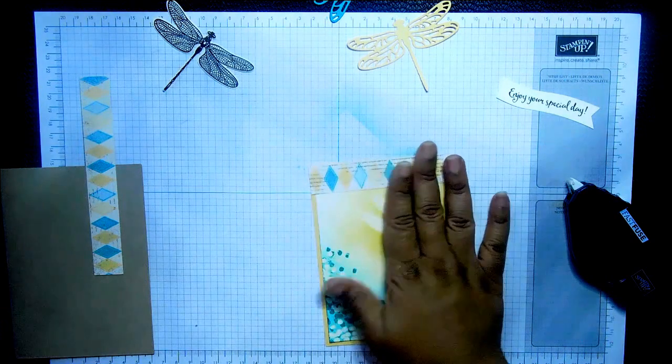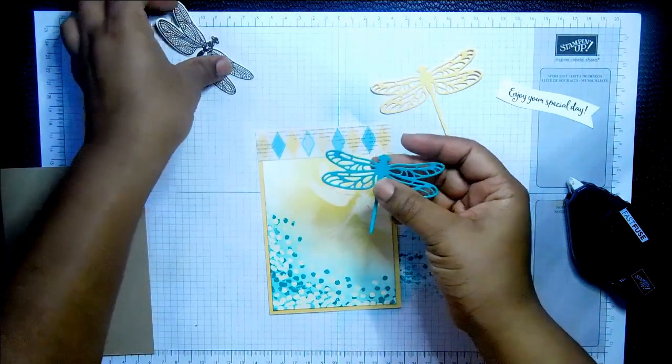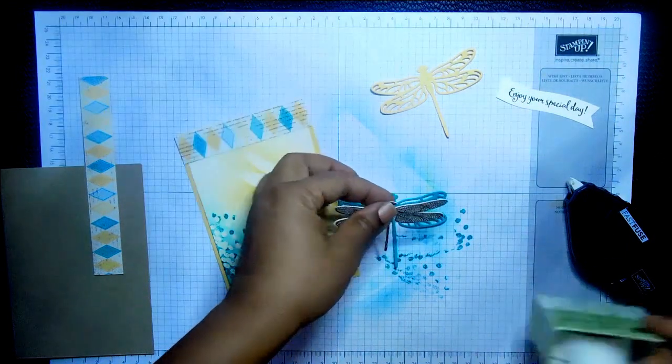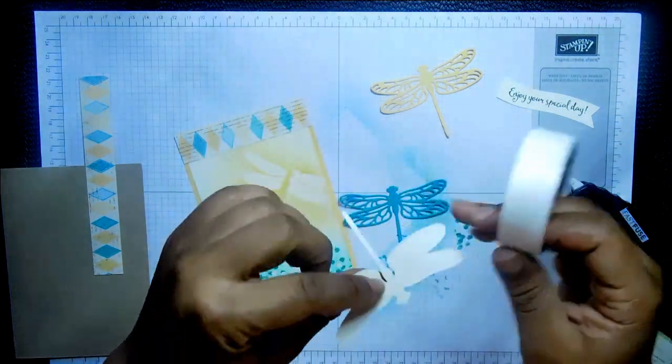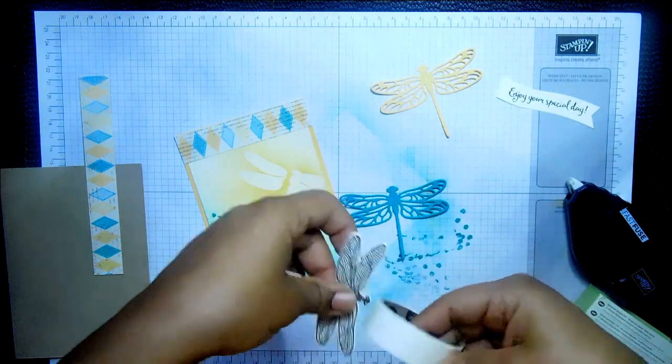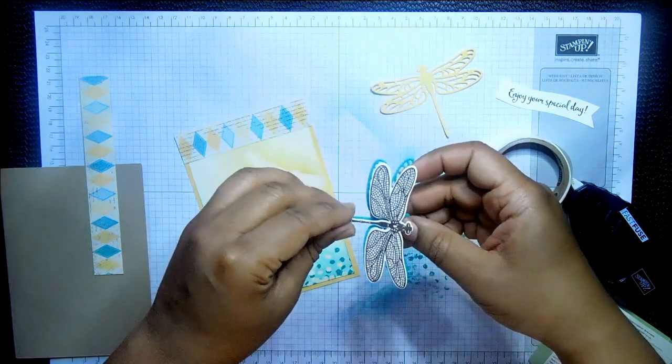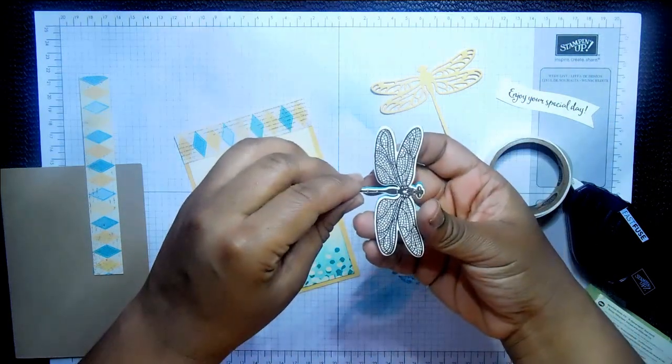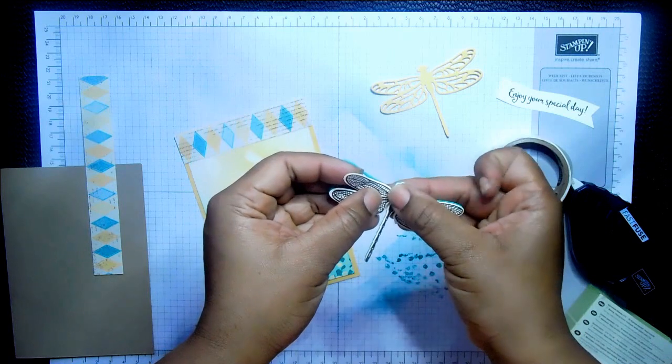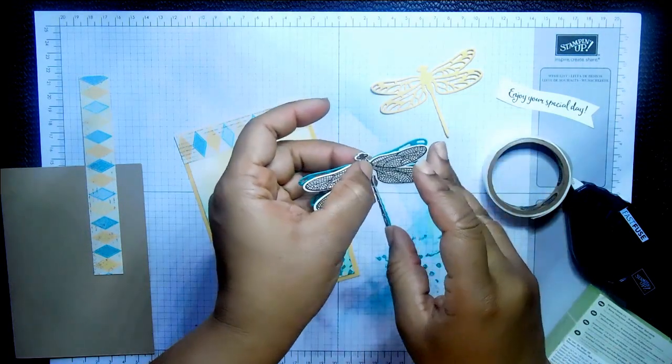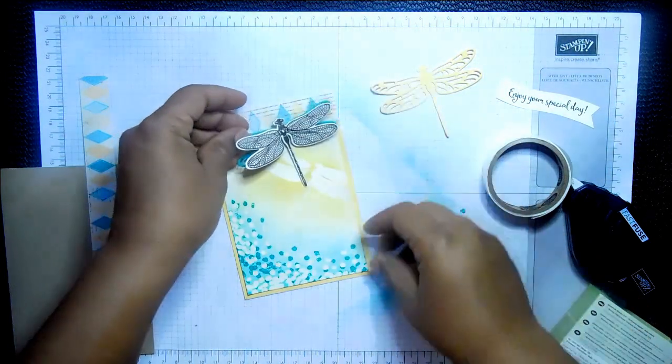Okay. So I'll do some Fast Fuse on the back of that. I'm going to put it right to the top of the So Saffron card. Just snip off the excess. Okay. I'm going to layer up these two. So I'm just going to take a glue dot on the back of this one, just in the middle of his body, and layer up on top of the Bermuda Bay. And then bend his wings up a little bit. Like that. Cute. Love it.